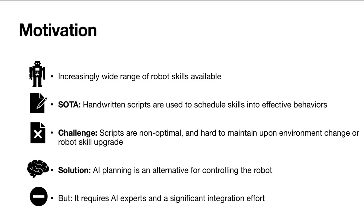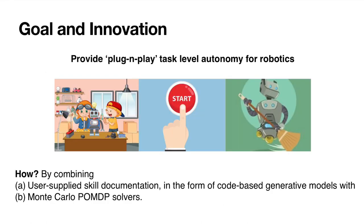Our approach is to use AI planning instead. However, classically, this requires AI experts and significant integration effort. Therefore, our goal is straightforward: we want to provide Plug and Play Task-Level Autonomy for Robotics. We achieve this by combining user-supplied skill documentation in the form of code-based generative models with Monte Carlo POMDP solvers.